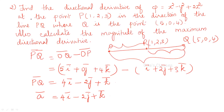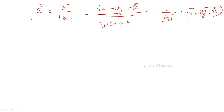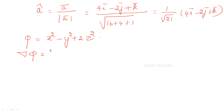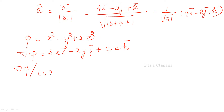Now let us find del phi. Phi is x² minus y² plus 2z². Differentiating partially: del phi equals 2x·i minus 2y·j plus 4z·k. At point P = (1, 2, 3), substituting gives del phi equals 2i minus 4j plus 12k.